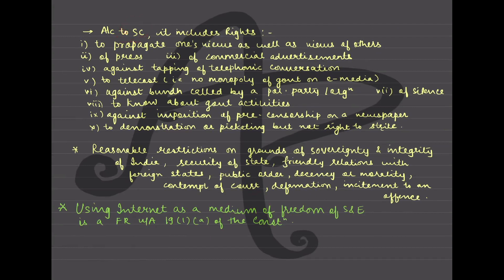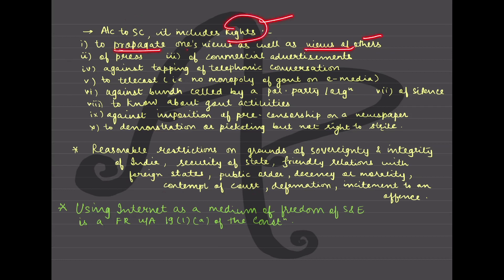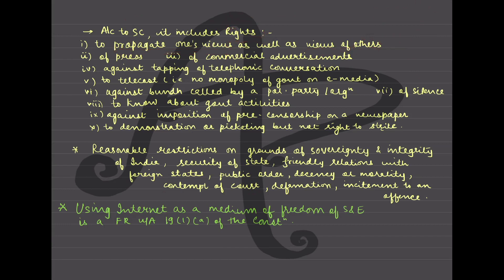The constitution gives this much, but the Supreme Court through various cases has interpreted and added further. According to the Supreme Court, it includes the right to propagate one's own views and others' views - so you can write about someone else's views too, like in a biography. Media and press are also included in freedom of speech and expression. So the right of press is included here only.